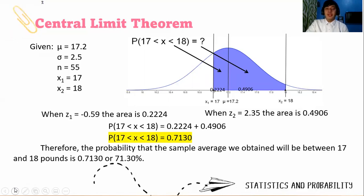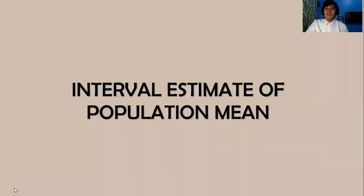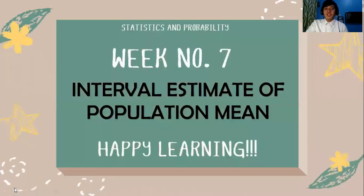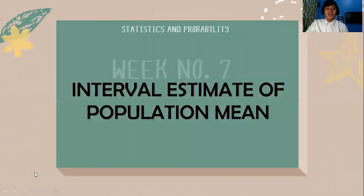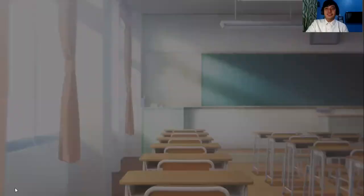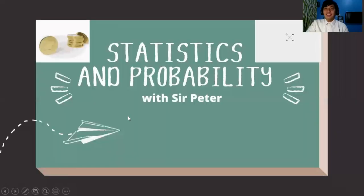Therefore, the probability that the sample average we obtain would be between 17 and 18 pounds is 71.30%. That ends our discussion on the applications of the central limit theorem. We will see you on week number 7 for the interval estimate of a population.